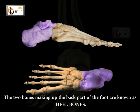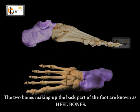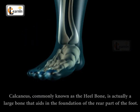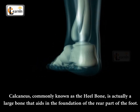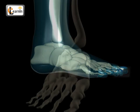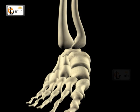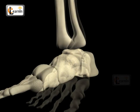The two bones making up the back part of the foot are known as heel bones. The calcaneus, commonly known as the heel bone, is actually a large bone that aids in the foundation of the rear part of the foot. The calcaneus connects with both the talus and the cuboid bones.